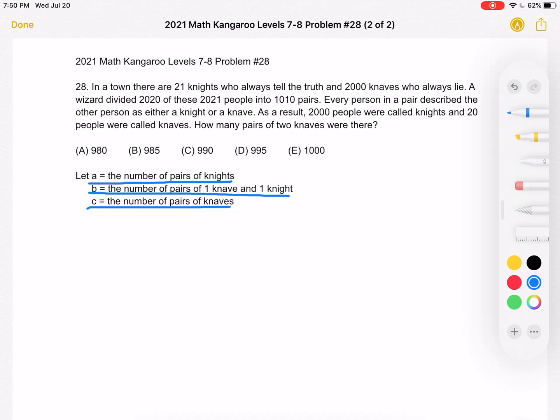We're going to try to relate all these three variables together and ultimately figure out what C is equal to, because we're trying to find how many pairs of two knaves are there. The first piece of information we're going to use is that there's a total of 1,010 pairs. So that means that A plus B plus C must be equal to 1,010.